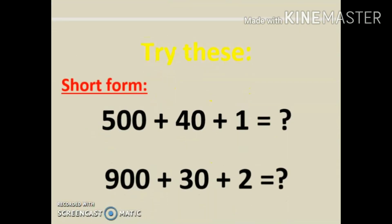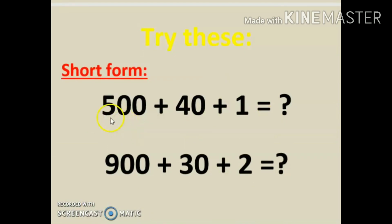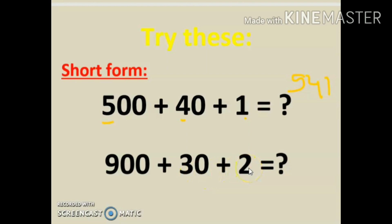Next, write the short form. Five hundred forty one — just write five hundred forty one. You can form a box and assign the positions: ones is one, tens is four, hundreds is five — so the number is five hundred forty one. Next: nine hundred thirty two. Nine comes under hundreds, three under tens, two under ones — so the number is nine hundred thirty two.